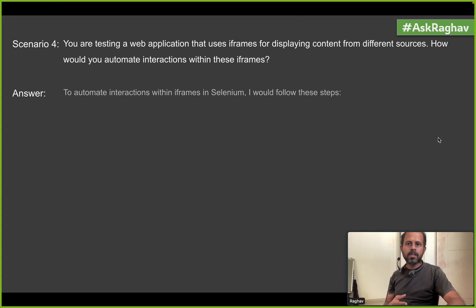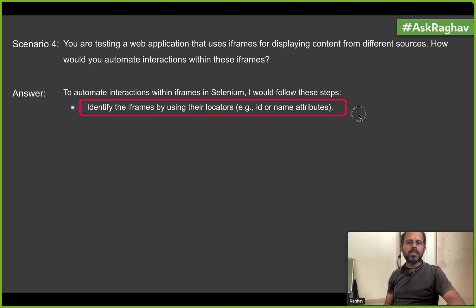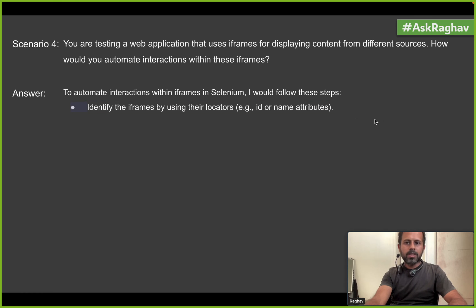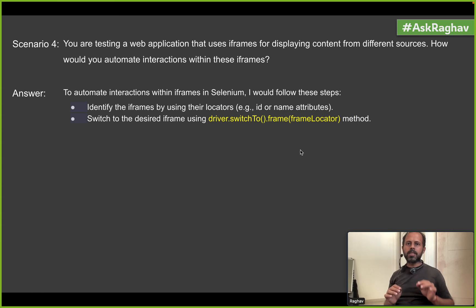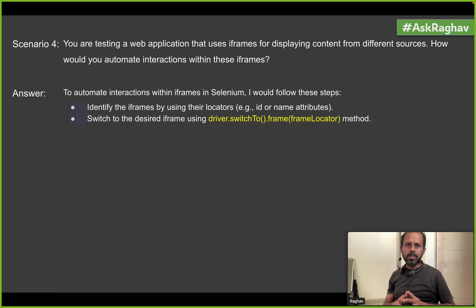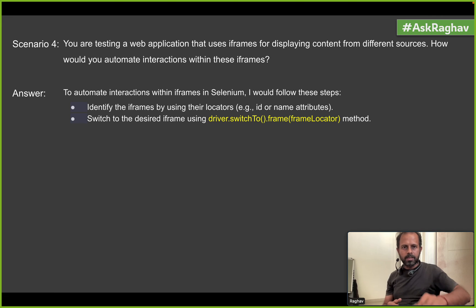With HTML5 and newer technologies the use of iframes has reduced, but if you do face frames and iframes there are ways to handle them in Selenium. The first step is to identify the frame or iframe by using its locators — ID, class, index, position, etc. After creating the locator, you switch inside the frame using driver.switch_to.frame. If you try to click a button inside the frame without switching first, it will not work — you must switch to the frame first and then click.